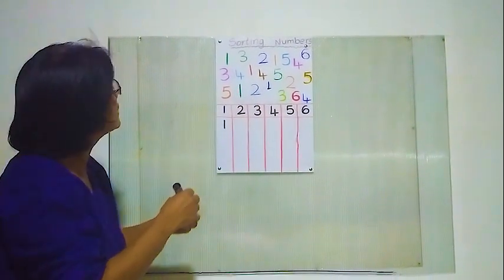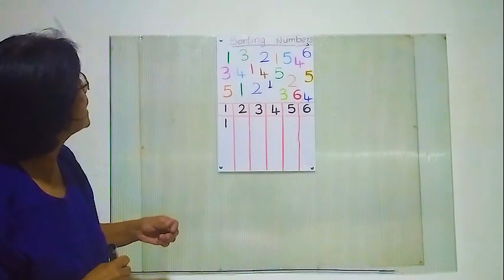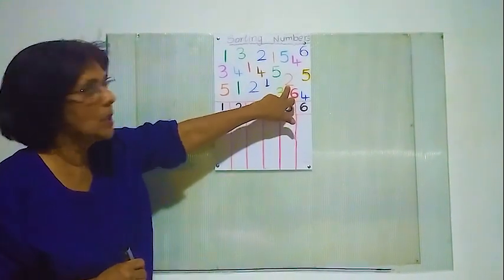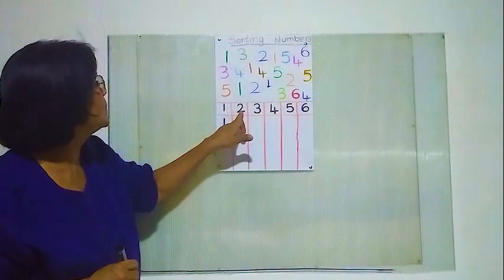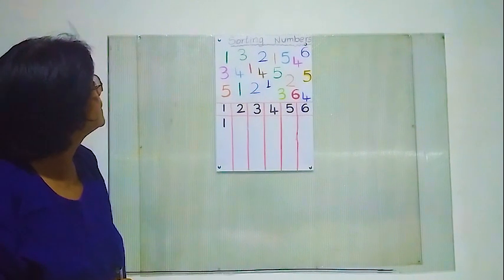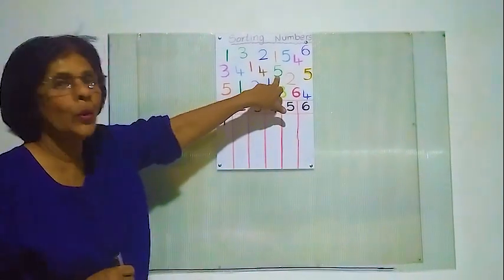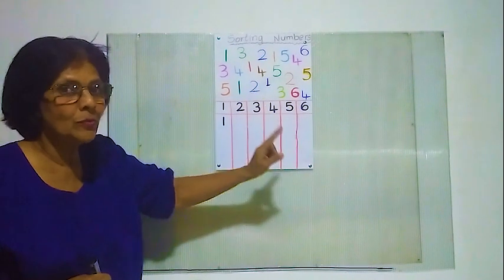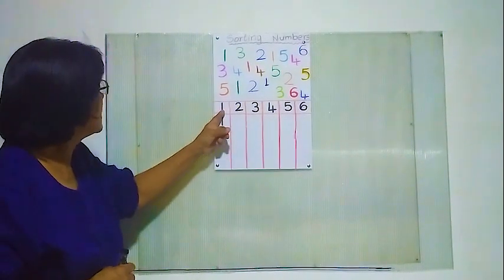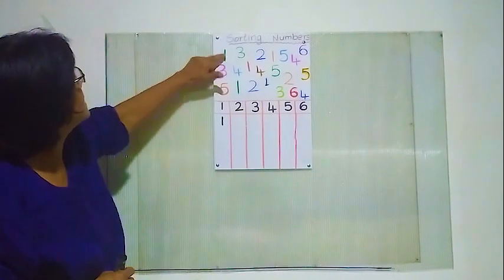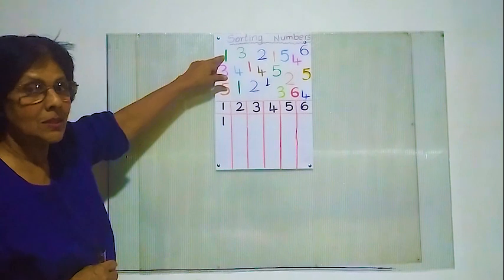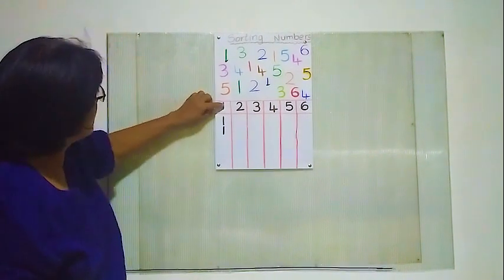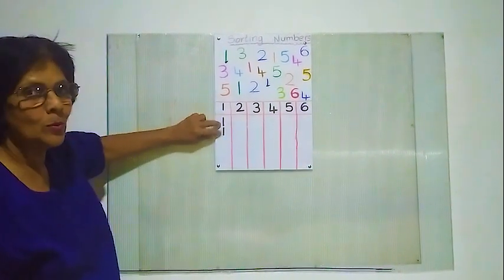Now here, another 1. Where's number 1? Are there any number 1's? Is this number 1? No, this is number 2. Where's number 1? Is this number 1? No, this is number 5. We want to find number 1. Is this number 1? Yes, this is number 1. We'll put a dot and write here number 1. That's 2 number 1's.